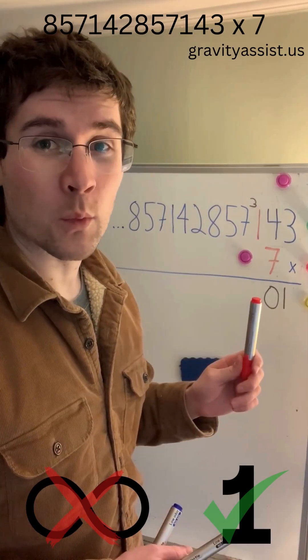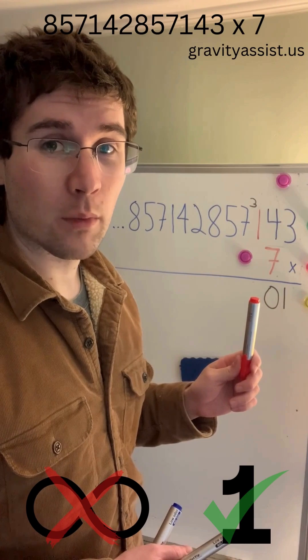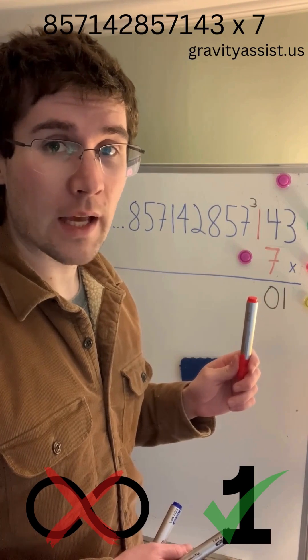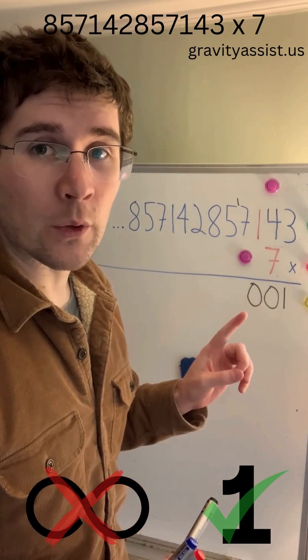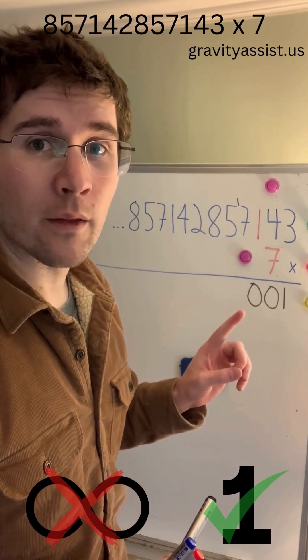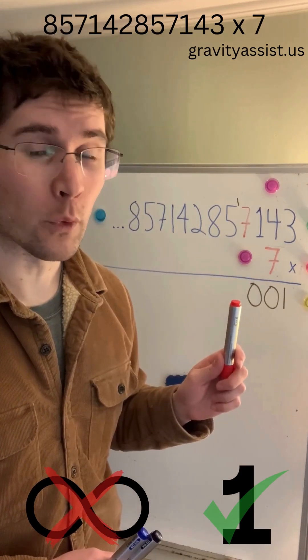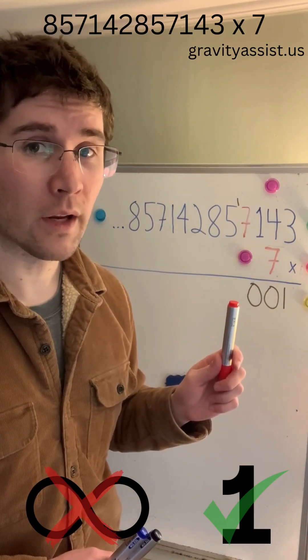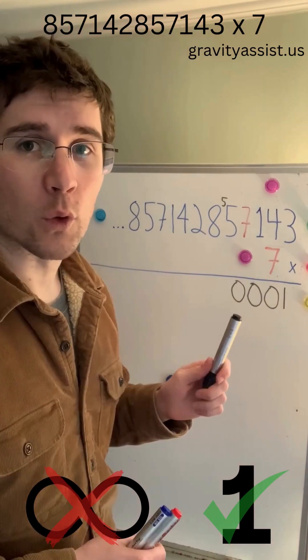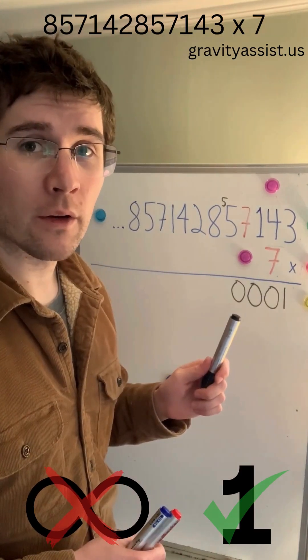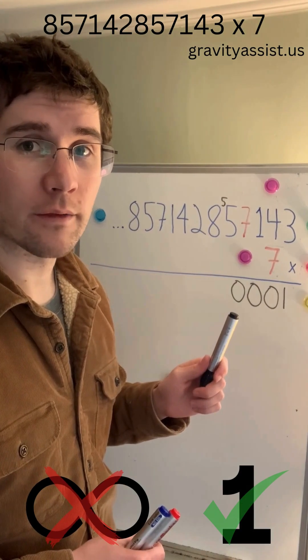7 times 1 equals 7 plus 3 equals 10, so we'll put a 0 down here and carry the 1. 7 times 7 equals 49 plus 1 equals 50, so we'll put a 0 down here and carry the 5.